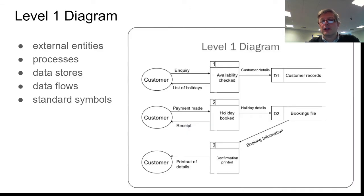Here's a level one diagram. It's still reasonably easy to understand what's going on. This time, we've got two data stores, D1 and D2. We've got three external entities which are all customers, and we've got three processes which, in this case, are labeled one, two, and three.